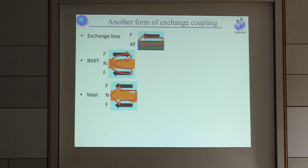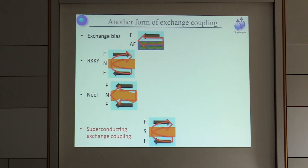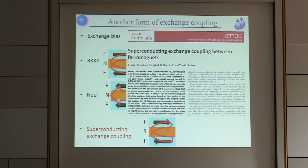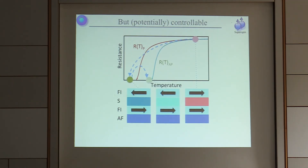The significance of this is that conventional spintronics is founded on a number of exchange interactions — exchange bias between an anti-ferromagnet and a ferromagnet, RKKY and Néel coupling — and our argument is that this represents another form of superconducting exchange coupling. This stabilizes an anti-parallel state, and was reported earlier this year. The key thing is that it's potentially controllable: if we can manipulate the superconductivity we can then manipulate the magnetism in a way which doesn't require external fields to be applied.